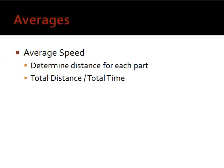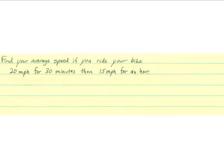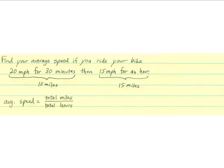Another type of average is average speed. So, first of all, you need to determine the distance for each part. And then, average speed is basically just total distance divided by total time, because speed already is distance divided by time. So, here's an example. Find your average speed if you ride your bike 20 miles an hour for 30 minutes, and then 15 miles an hour for an hour. So, the first thing we need to do is figure out the distance. So, the first part, if you go 20 miles per hour for half an hour, then you went 10 miles. And if you go 15 miles an hour for one hour, then you went 15 miles. So, next, all we need to do is figure out the total miles divided by the total hours. So, the total miles is 10 plus 15. The total hours is one-half plus one. And so, we get 25 over 1.5, or 16.67 miles per hour, the total average speed.